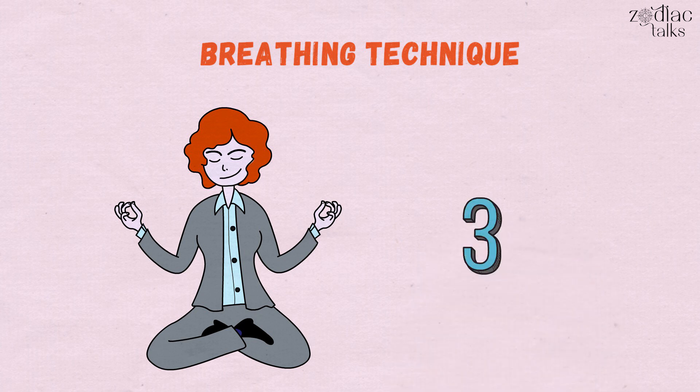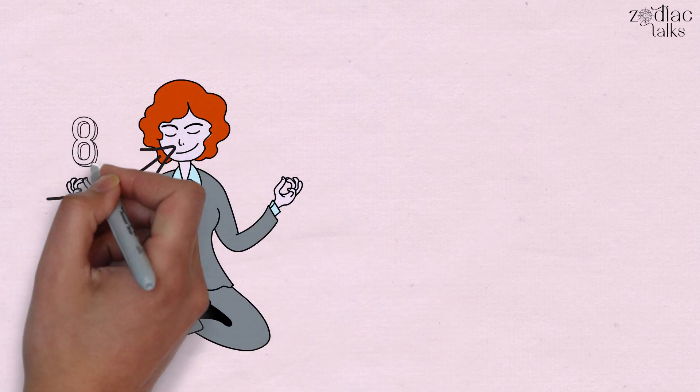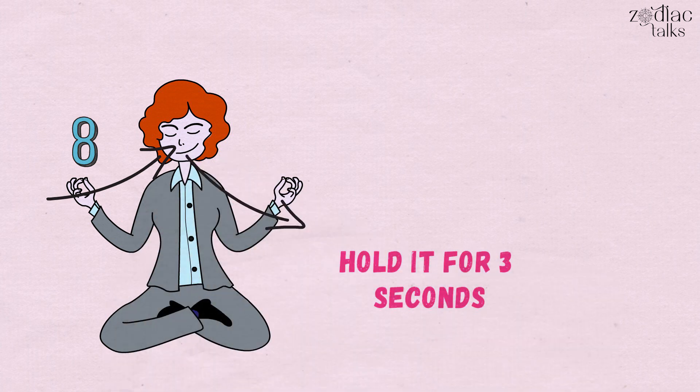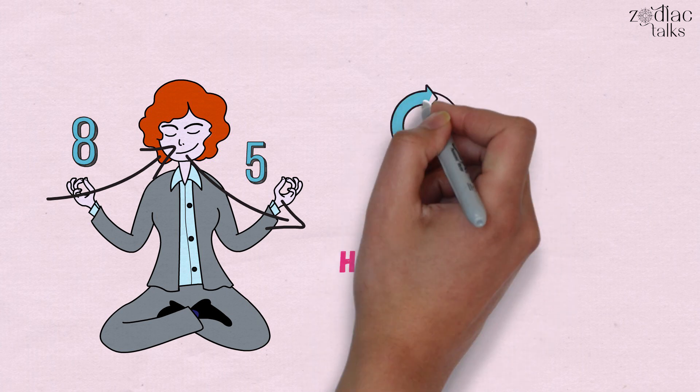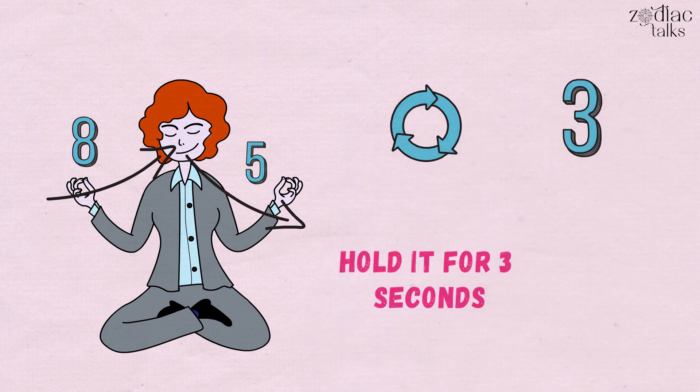Take three normal breaths. Inhale through your nose and exhale through your mouth. While you're breathing in, count to eight, and then hold it for three seconds. Then exhale while counting through five. Repeat this whole process and end it with three normal breaths. You'll find that your restlessness has reduced significantly.